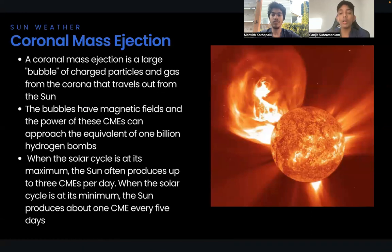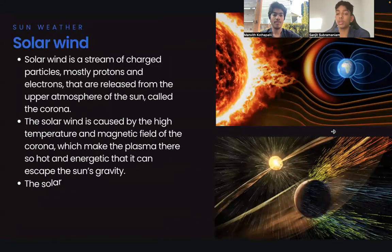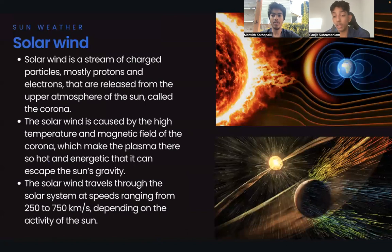Now, the solar wind. Solar wind is a stream of charged particles, mostly protons and electrons, that are released from the upper atmosphere of the sun, called the corona. The solar wind is caused by the high temperature and magnetic field of the corona, which make the plasma there so hot and energetic that it can escape the sun's gravity.